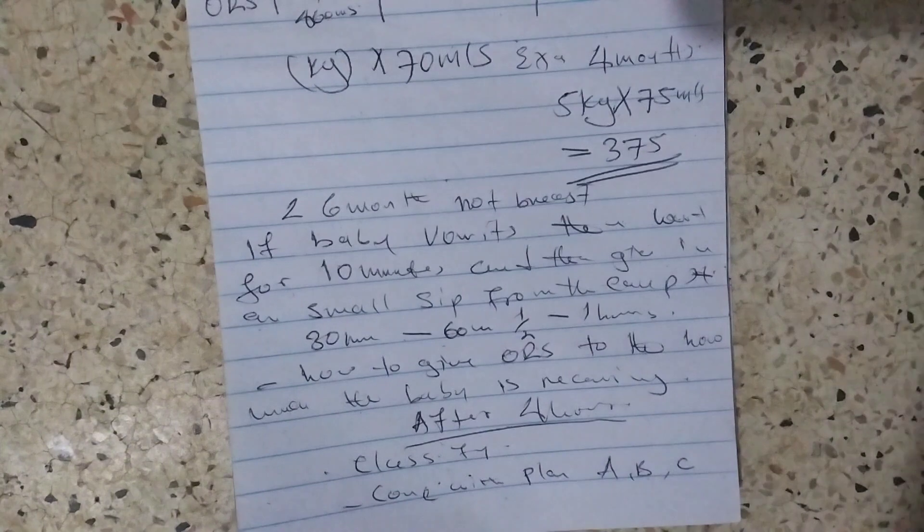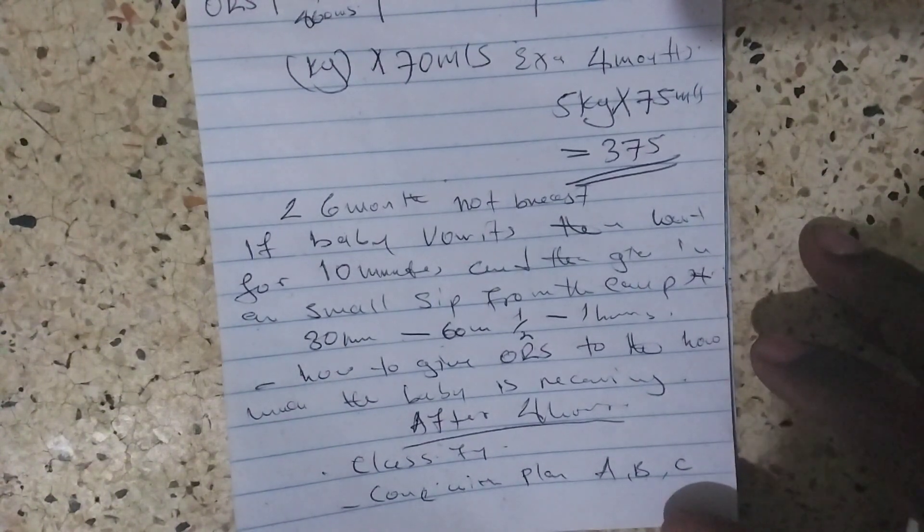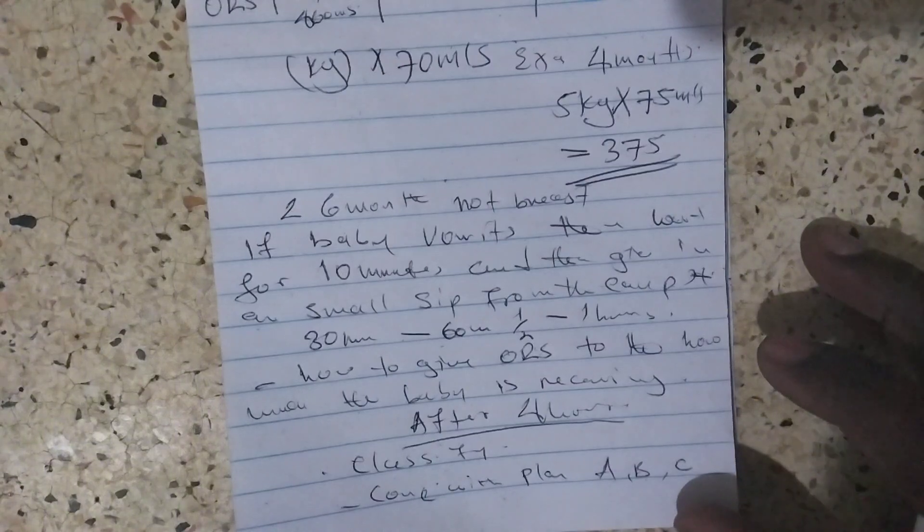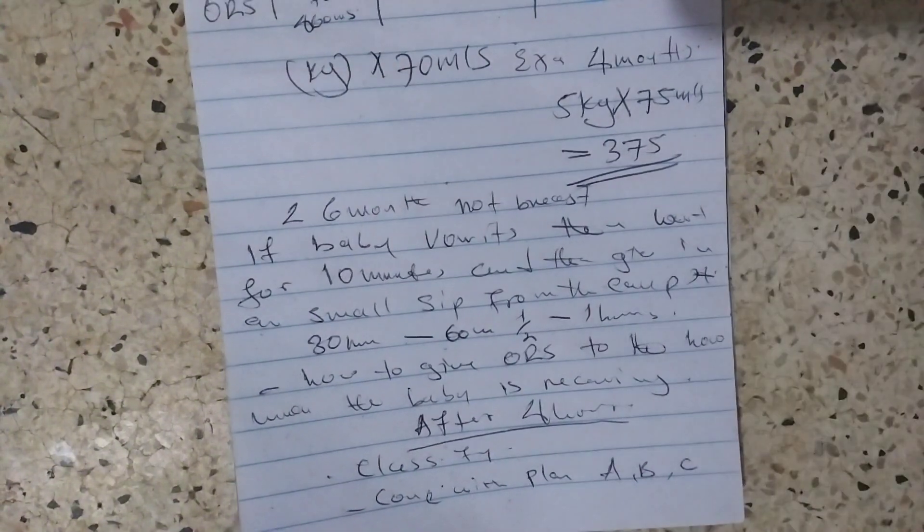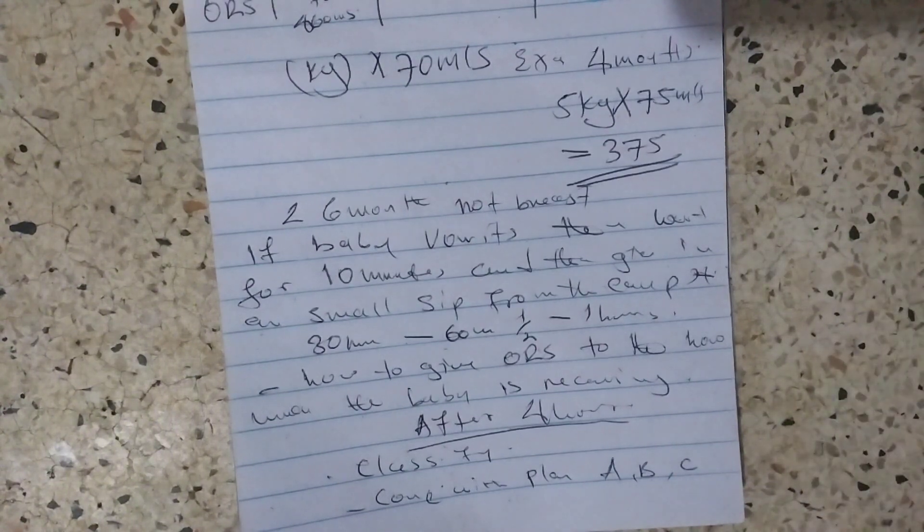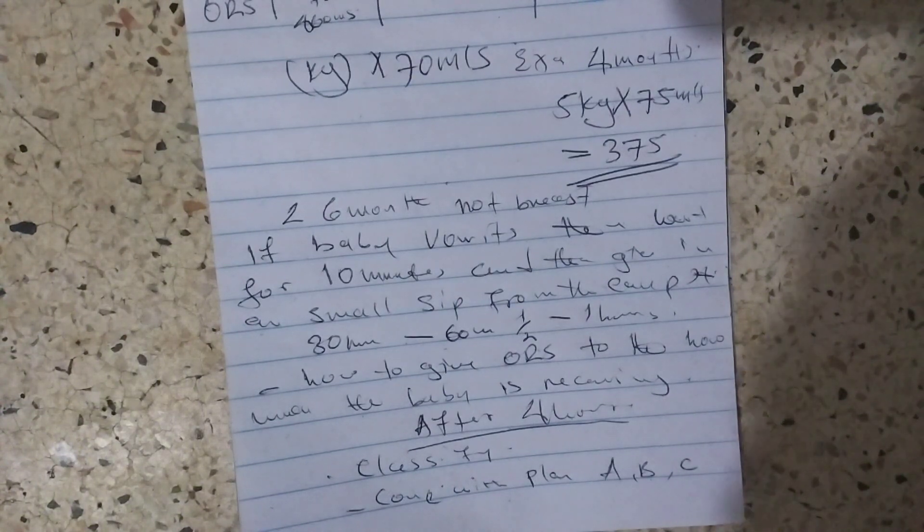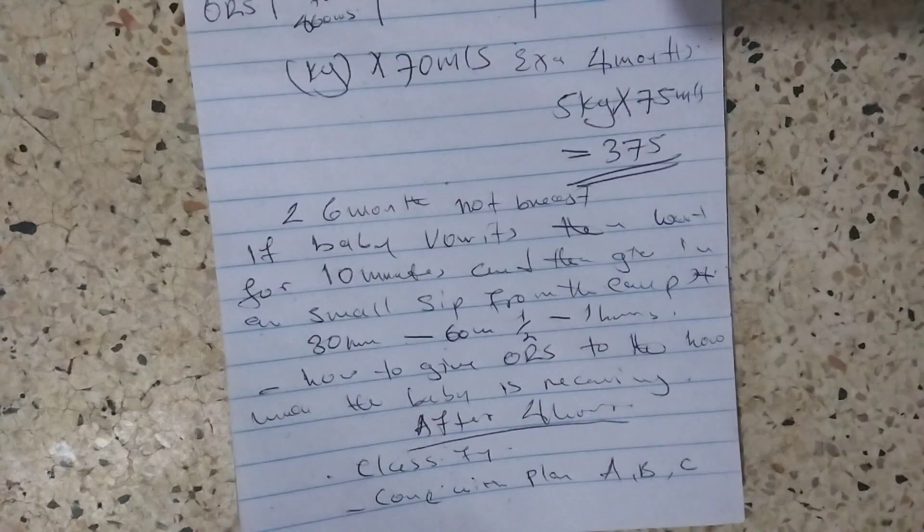You need to explain to the mother the four rules in Plan A: management of dehydration, giving extra fluid, giving zinc, giving food to the baby, and then when to come back to the facility.